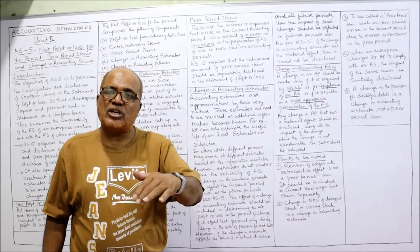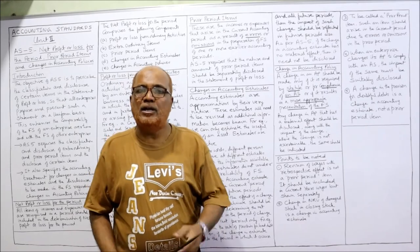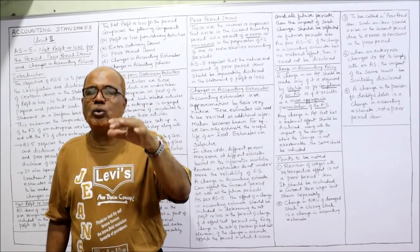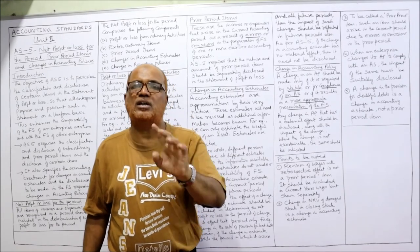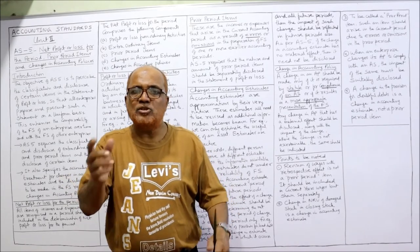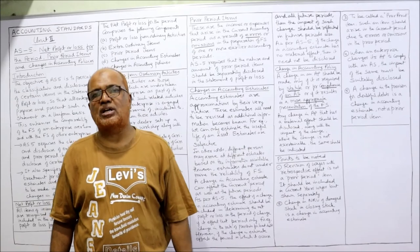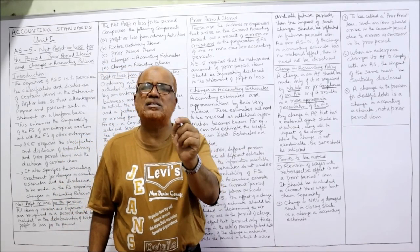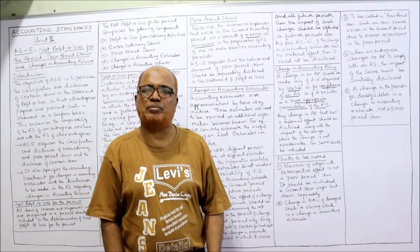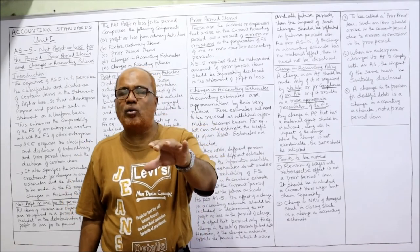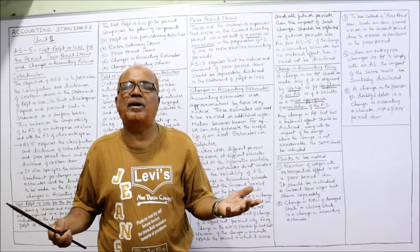Whatever effect the change in accounting policy has on profit for the current year and future years should be disclosed. For example, if a change in accounting policy reduces profit by 10,000 rupees in the current year, that should be disclosed in the financial statements. If the effect is immaterial, insignificant, or the amount cannot be determined, the management must state in the financial statements that the accounting policy has been changed and that its effect is minute or cannot be ascertained.